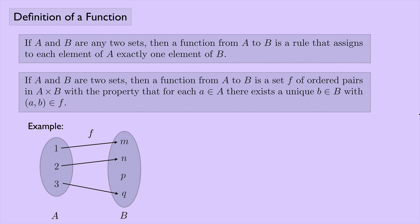Another name for a function is sometimes called a mapping. We might say that 1 is mapped to M, 2 is mapped to N, and 3 is mapped to Q. Definition one says that we have a rule that assigns to each element of A exactly one element of B — here each element has something assigned to it, and 3 is assigned to just Q, not both P and Q. So this follows the definition and would be a function according to the first definition.